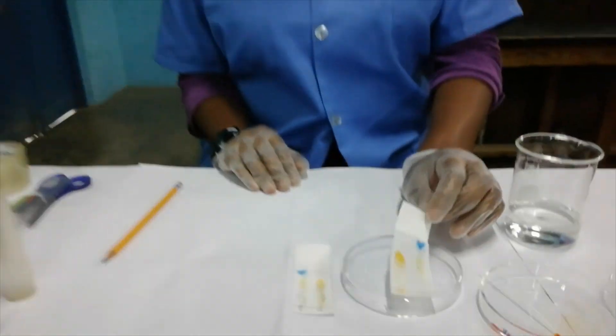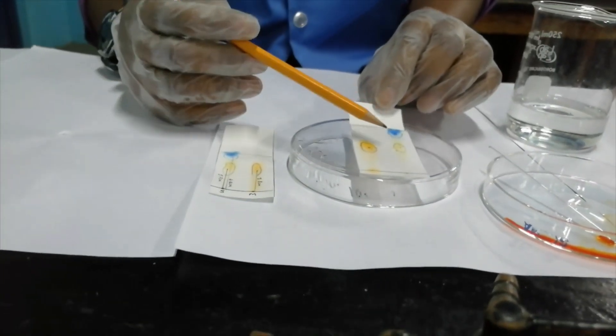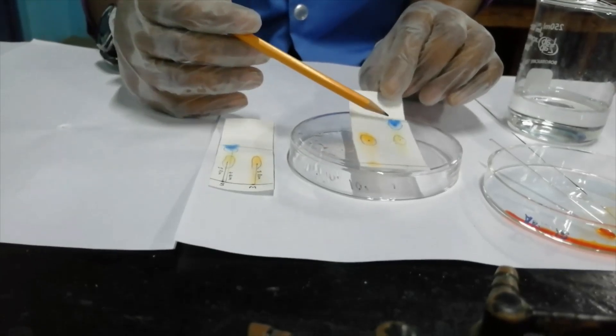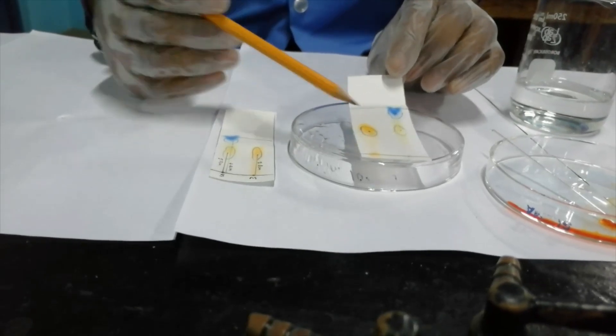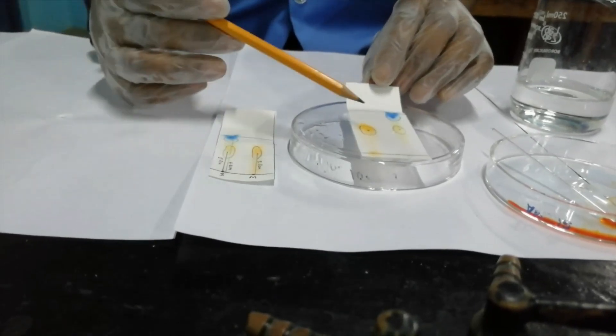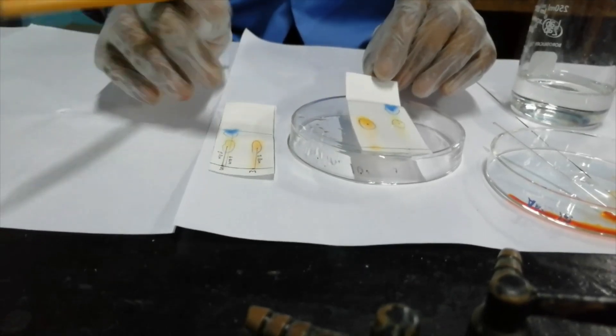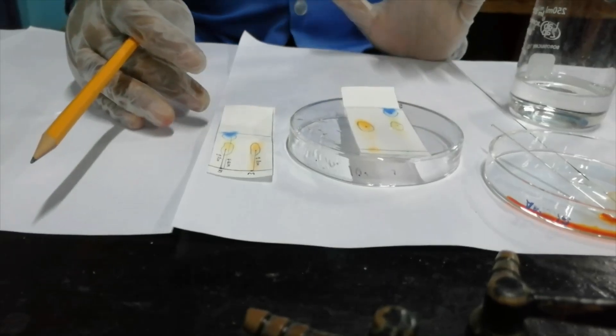The second chromatogram has been developed and I've already marked the solvent front and circled the spots. You have to be careful because it's still wet and you can see that it's still moving. This is what it looks like and I'm going to measure the distance traveled by each spot and put the values at the end of the screen.